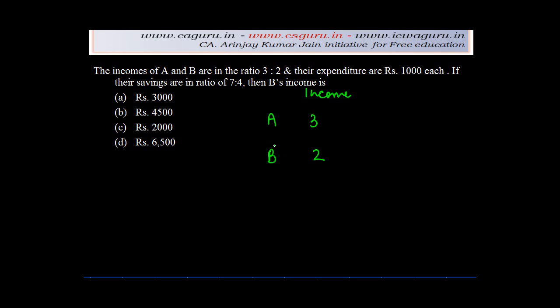Their expenditure is Rs. 1,000 each. Then you are told that their savings are in the ratio of 7 is to 4.